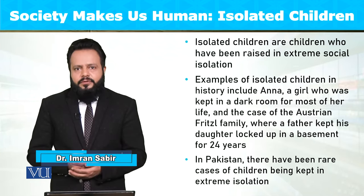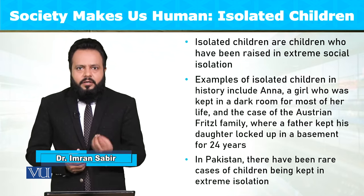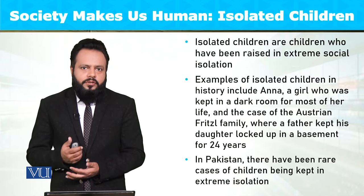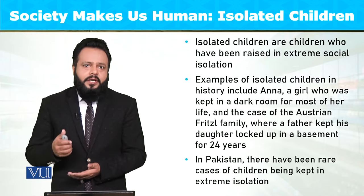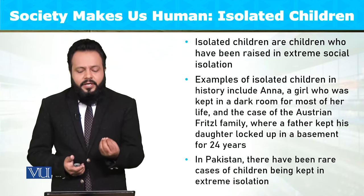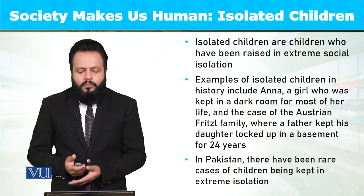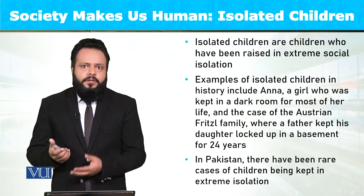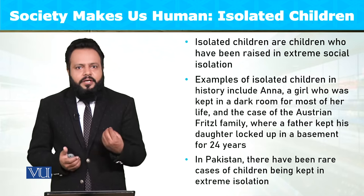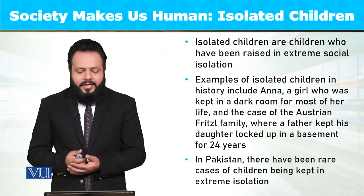Examples of these isolated children include a girl named Anna. She was from Pennsylvania, born in 1932. Since she was an illegitimate child, she was kept in isolation in a dark room for most of her life. She was born in 1932 and died in 1942, just at the age of 10 years.